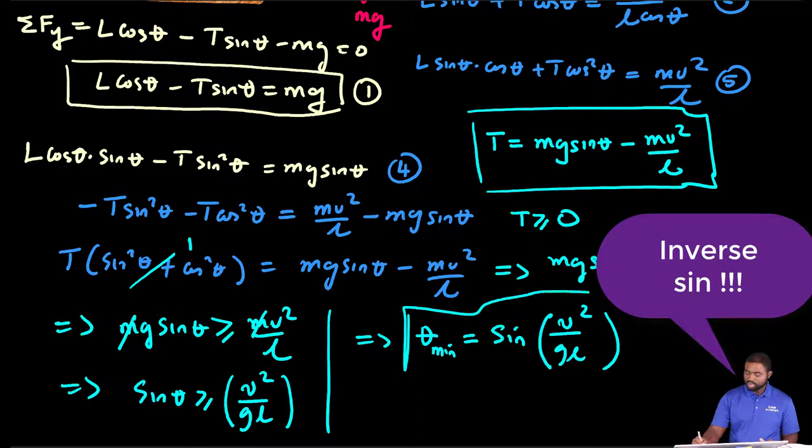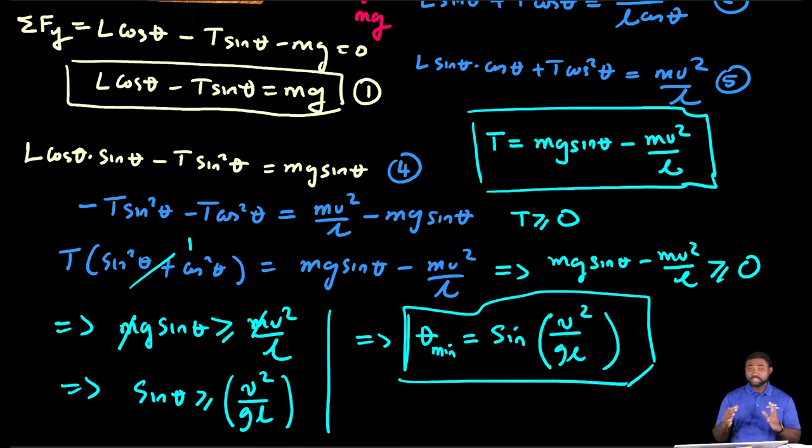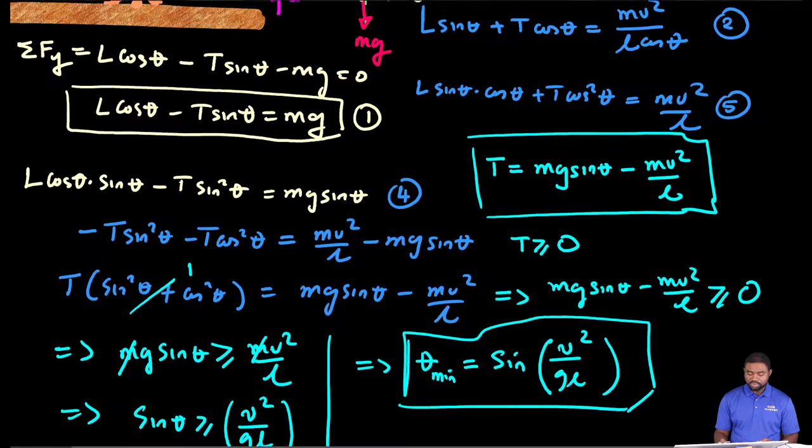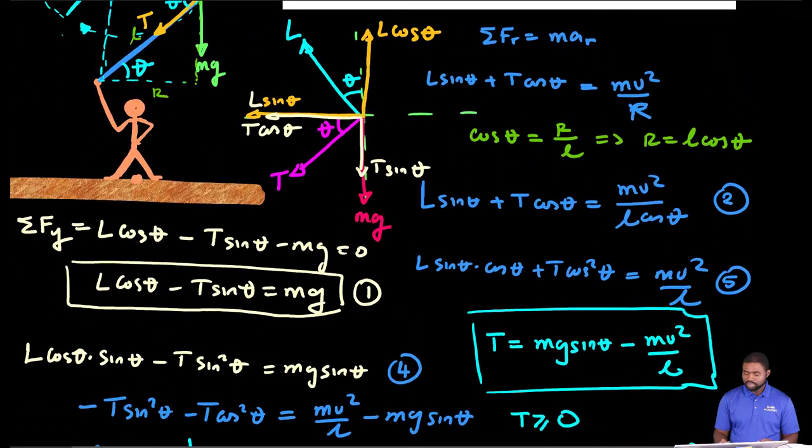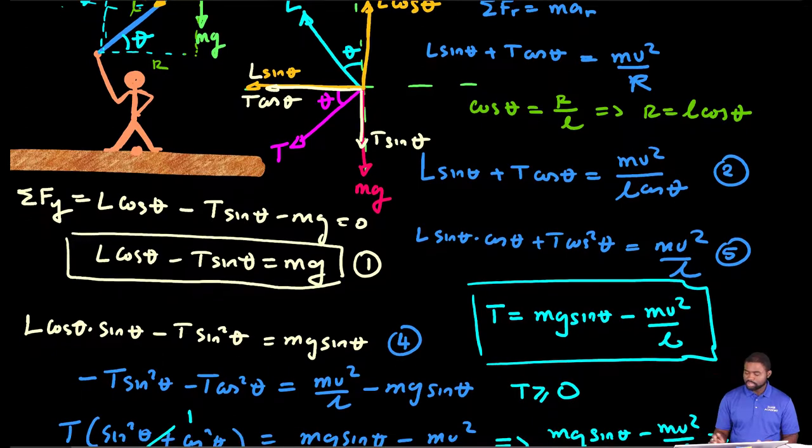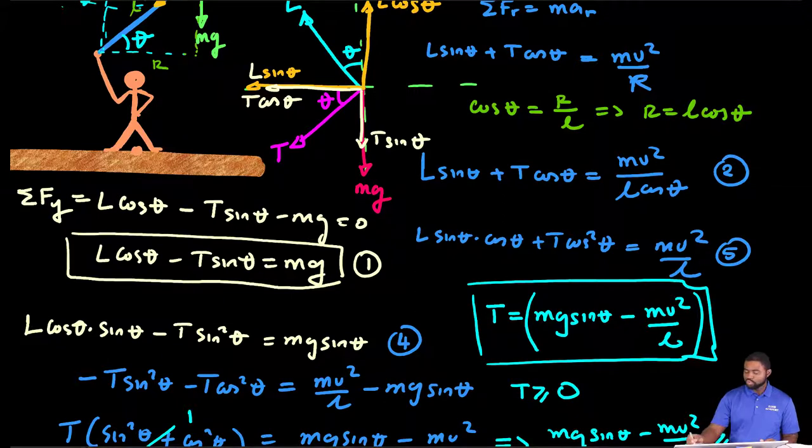This means that theta minimum will be equal to the sine inverse of V squared over Lg. This is the minimum angle required to maintain the flight, to maintain a stable flight. Now, the next question is for us to calculate the lift L. I'm going to leave this as an assignment, but the hint to this problem is you know the expression for T. You can choose any one of these equations and substitute the expression for T and solve for L.